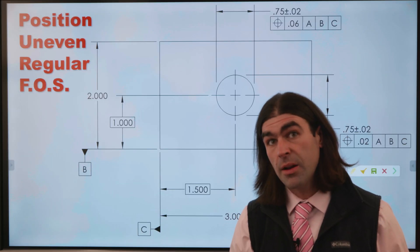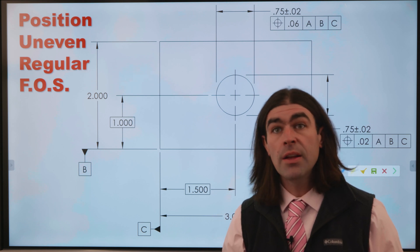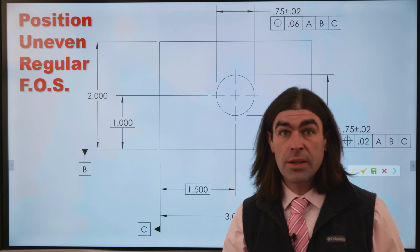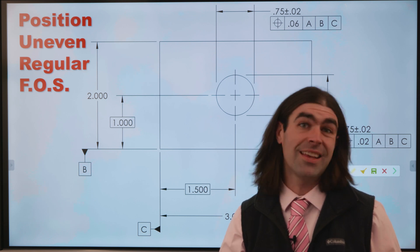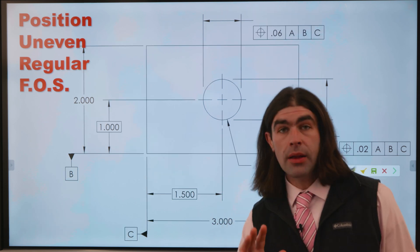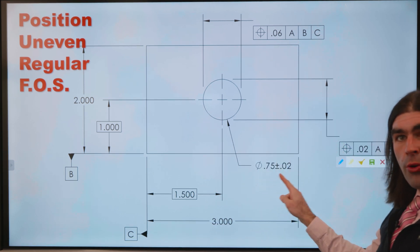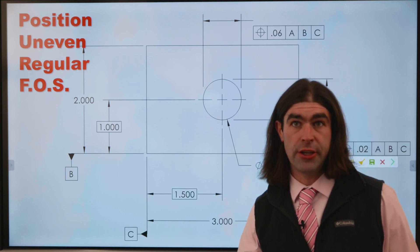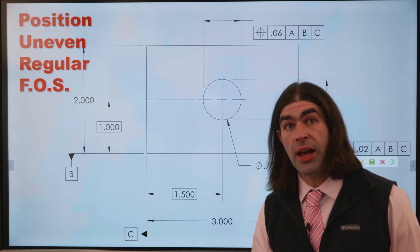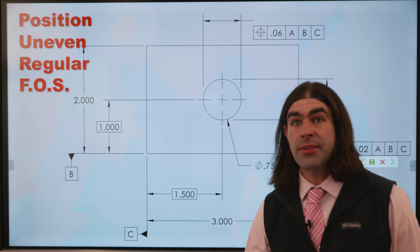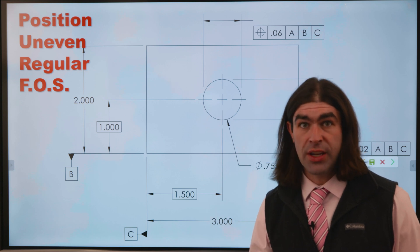In this video, I'm going to chat about some advanced topics in position and profile, specifically dealing with uneven tolerance zones and controlling irregular features of size, things like slots. In this first example, we've got two feature control frames controlling one whole feature. This is a diameter — a regular feature of size — so we're going to be controlling the axis of the unrelated actual mating envelope, just like we would with any other hole.